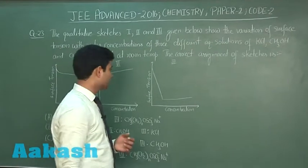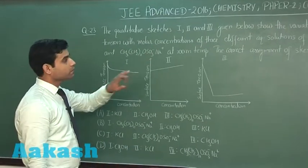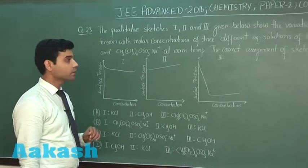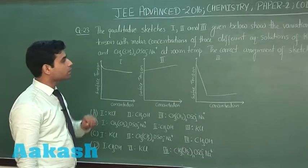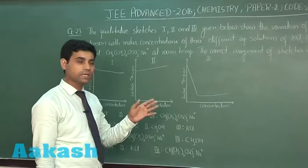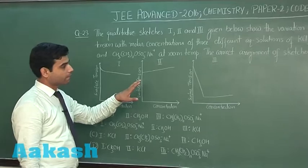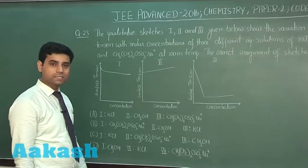This is the next question we have. The qualitative sketches 1, 2 and 3 given below show the variation of surface tension with molar concentrations of 3 different aqueous solutions of KCl, methanol and a surfactant given at room temperature. The correct assignment of sketches is.